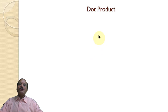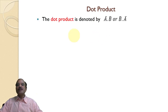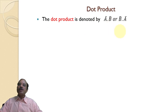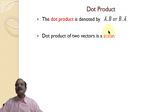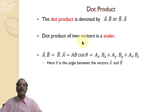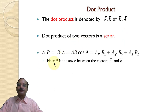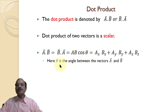One more term we often use in case of vectors is the dot product. The dot product is denoted by a·b or b·a. This dot product is a scalar quantity, so a·b is the same as b·a. To calculate this dot product, we use the formula ab·cos θ, where θ is the angle between vectors ā and b̄.